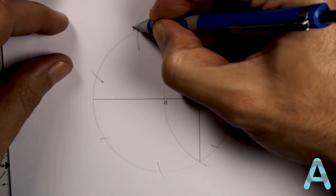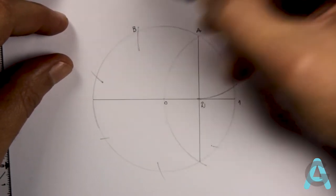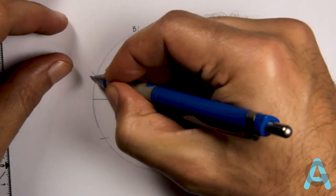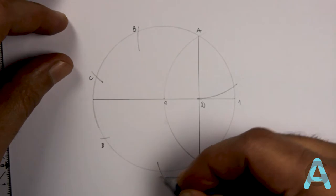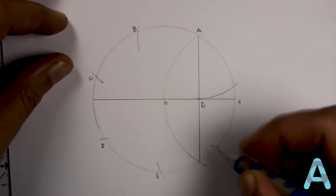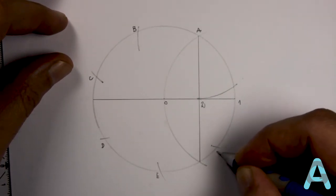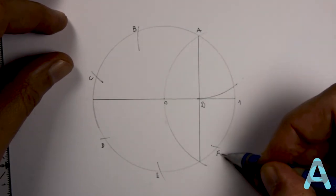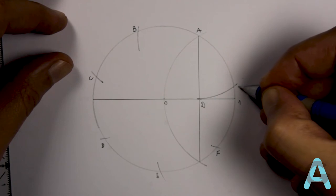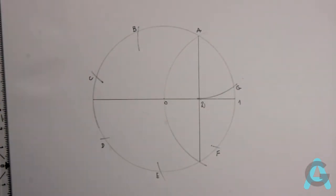Now let's name the points. B, C, D, E, F, and G.